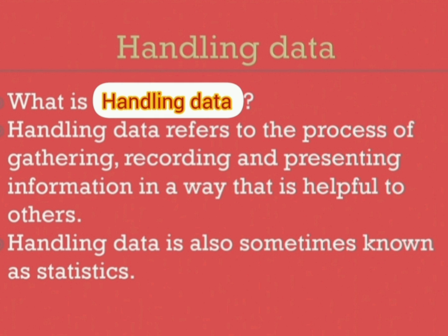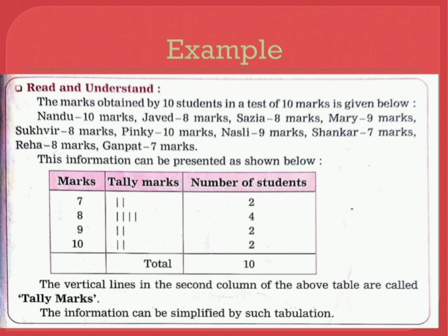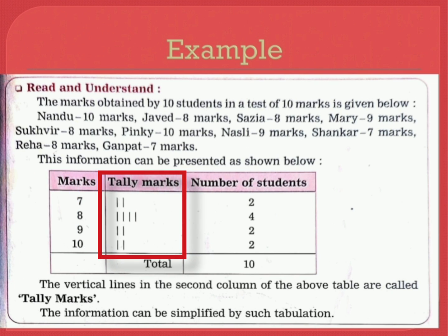Let's read and understand. The marks obtained by 10 students in a test of 10 marks is given below. This information can be presented in a table. The vertical lines in the second column of the above table are called tally marks. The information can be simplified by such tabulation.